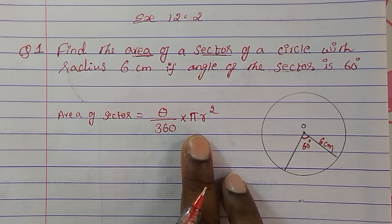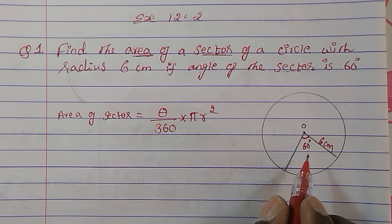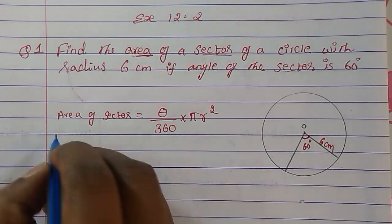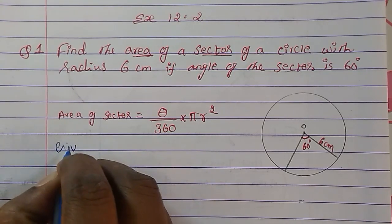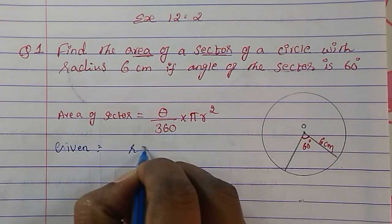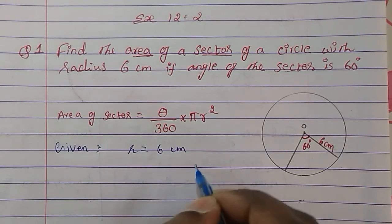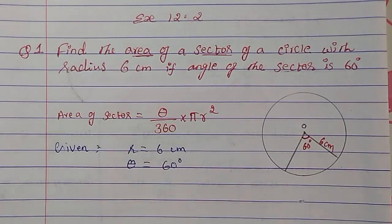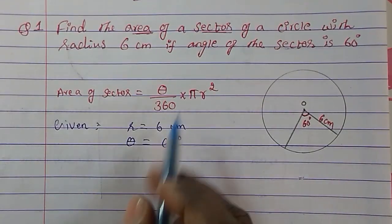Let's use this formula with whatever is given to us. Write down given: radius r is 6 cm, and theta is 60 degrees.